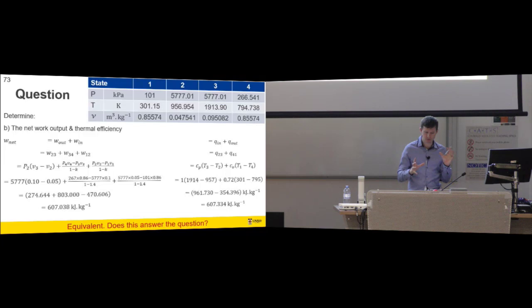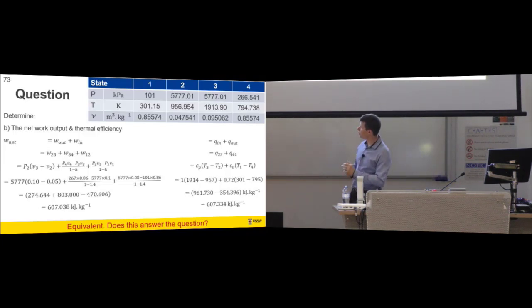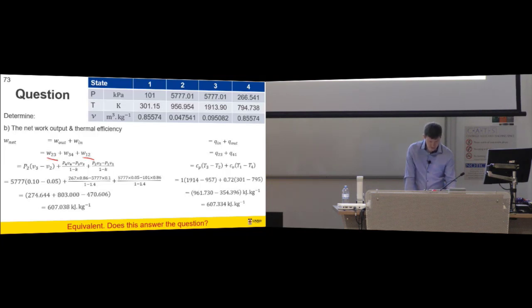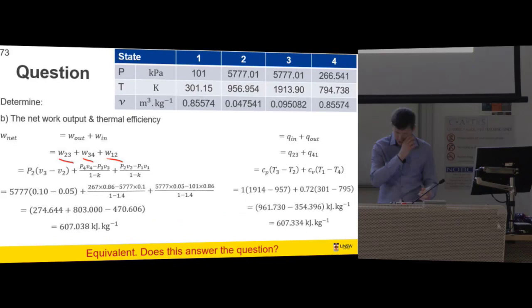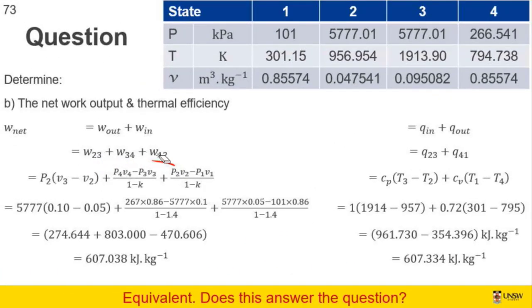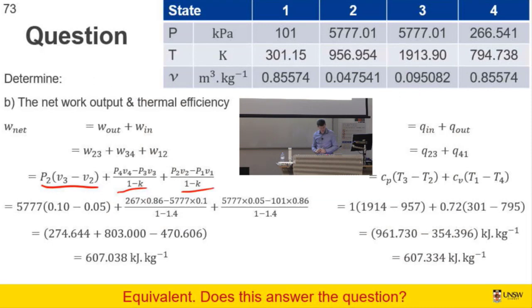The network and thermal efficiency. Let's start with network output. Network is the summation of your work out and your work in. It's the sum of all the works that happen. So there's three processes that have work. There's the isentropic compression. There's the isobaric expansion and there's the isentropic expansion. So there are three processes that have work. One of them is isobaric, for which the work formula is relatively trivial. And then the other two are isentropic, for which the work formula is less trivial but is a result of integral.